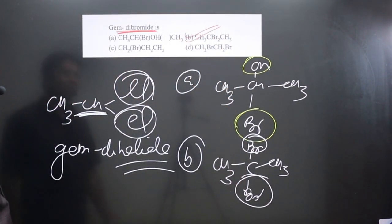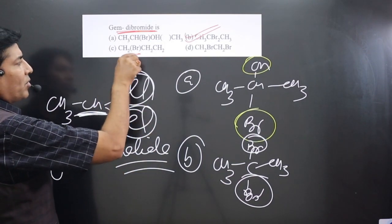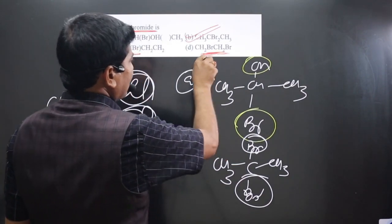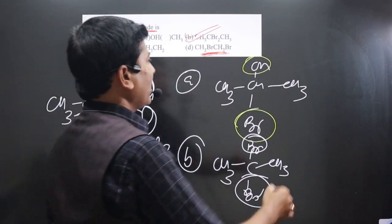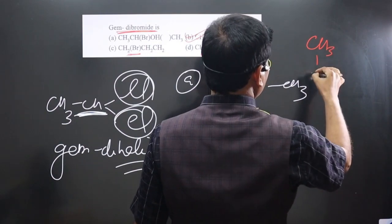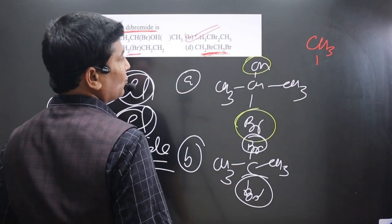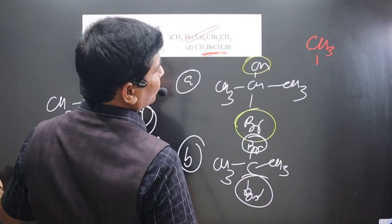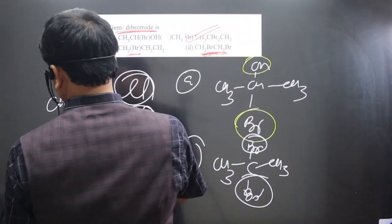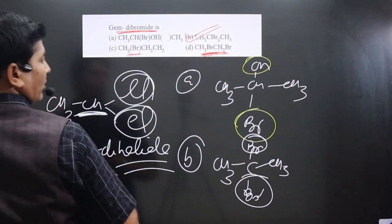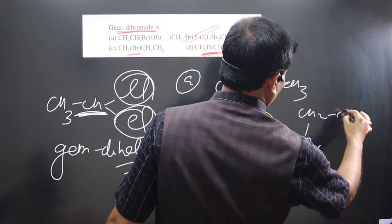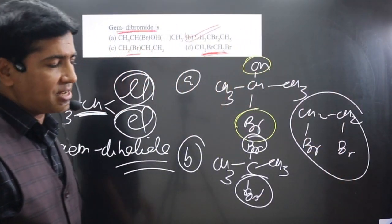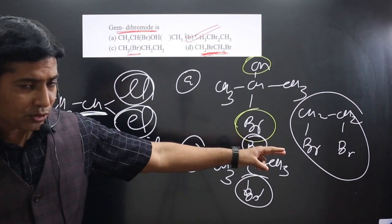In option C, only one halogen is attached, hence it is a monohalide. For option D, the structure we have is CH2Br — CH2Br. You can see halogens are not connected to the same carbon.